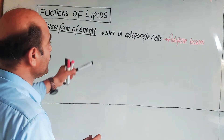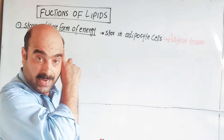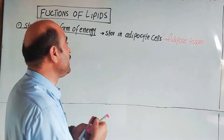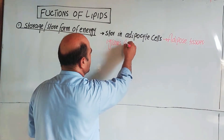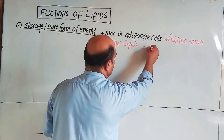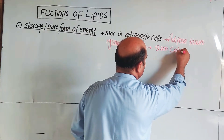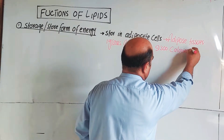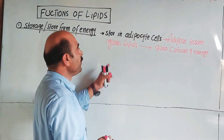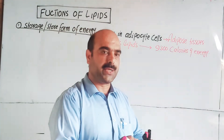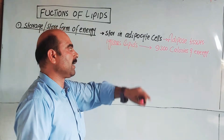During starvation, one gram of lipid breaks down to release a large amount of energy. One gram of lipid gives us 9,300 calories of energy. Calories is the unit of heat or energy. During need, lipids are hydrolyzed or broken down, releasing 9,300 calories of energy per gram.